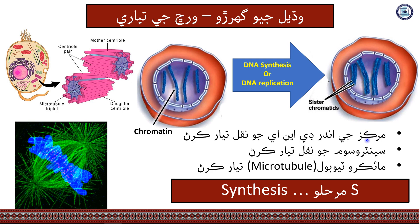During the S phase, DNA is replicated — the number of DNA molecules doubles. Chromatin is duplicated as well, so that each daughter cell will receive a complete copy of DNA.